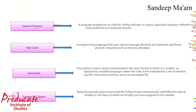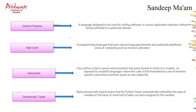The first one is general purpose. This is a language designed to be used for writing software in various application domains. Means, just like other programming languages that are developed for a particular domain, Python is not restricted to a particular domain.